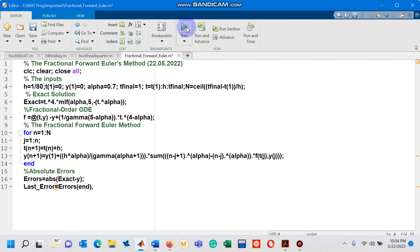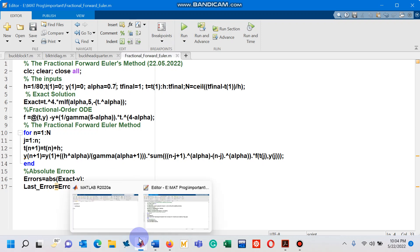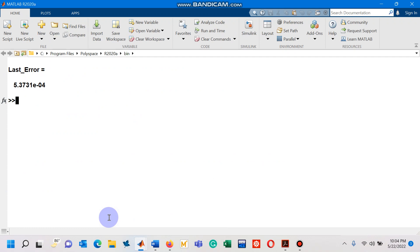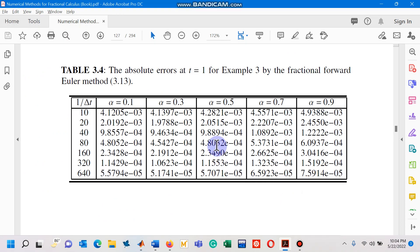Let's run this script again and now you can see its output in the command window. The last error is 5.3731 times 10 to the power minus 4. Let me confirm it from here: 1 upon 80 and 5.3731 times 10 to the power minus 4.